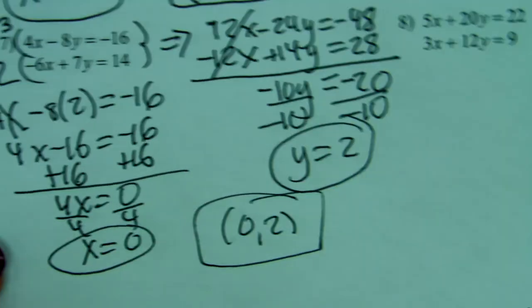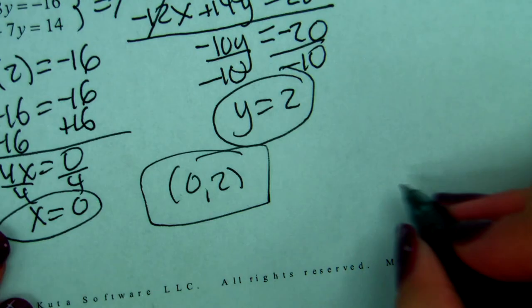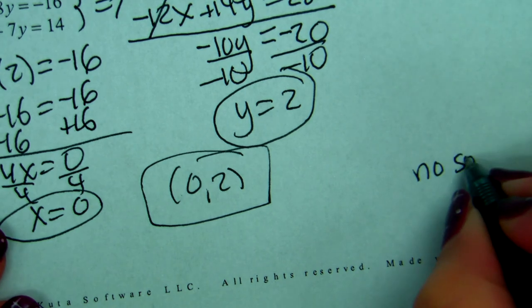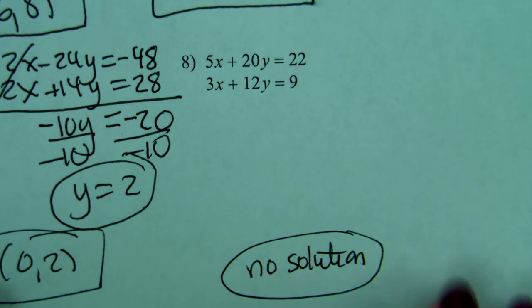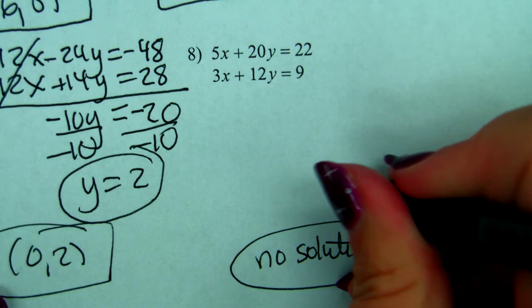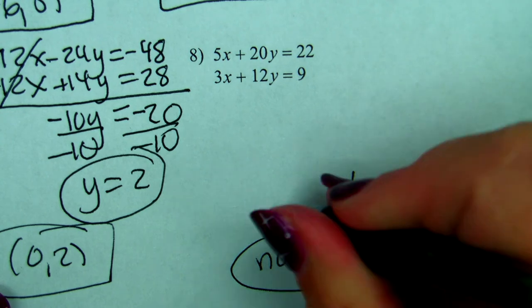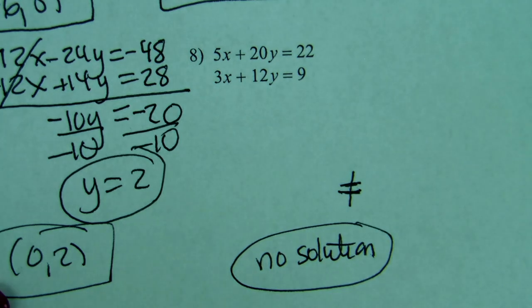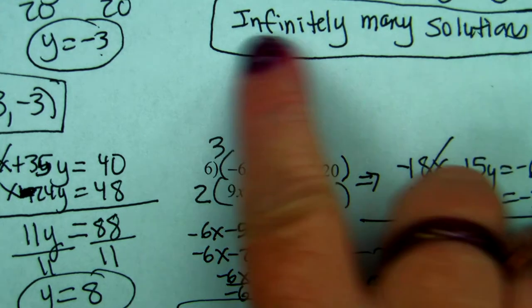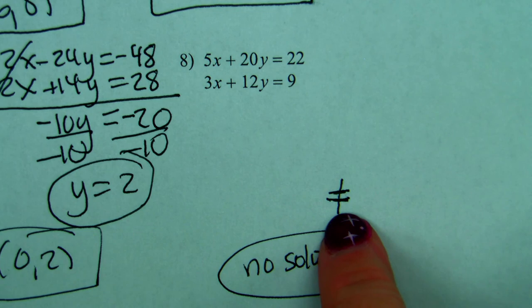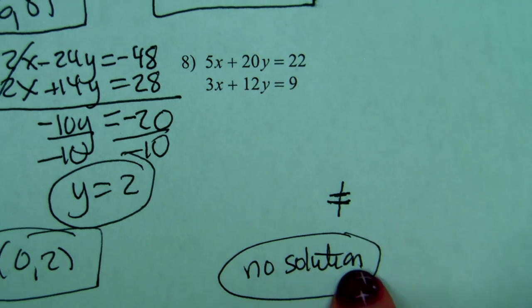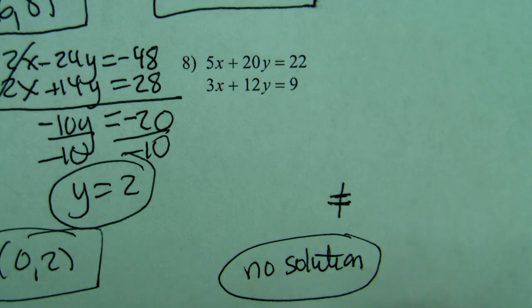You can try number 8 if you want — the answer is no solution. Because you get two things that are not equal to each other, and that's never true. If you get two things equal to each other, it's infinitely many solutions. If you get two things not equal to each other, you get no solution. I'll make sure the homework has a no solution problem so you get more practice. Good luck.